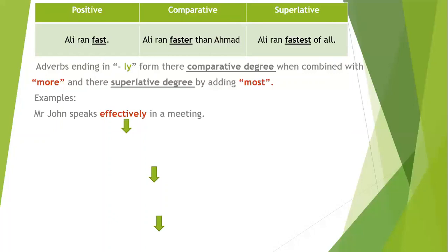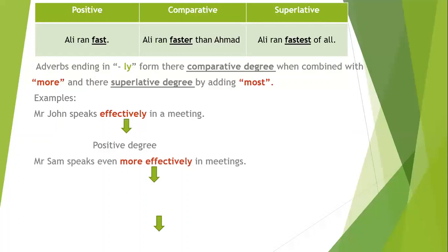'Mr. John speaks effectively in a meeting.' Here 'effectively' is the positive degree because we are talking only about Mr. John. When you talk about another person, you use the comparative degree. For example, 'Mr. Sam speaks even more effectively in meetings.' Since 'effectively' ends in '-ly', we add 'more' before it to form its comparative degree.